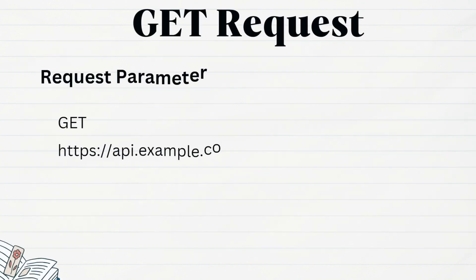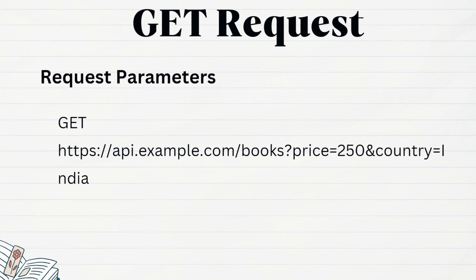Now let us analyze the different components of a REST request. To retrieve a list of all books filtered by price and country, a GET request can be used. The first part is GET, which tells us the type of HTTP request. Then we have a base URL common to all application endpoints, followed by slash books, which is the actual endpoint. After slash books, we can see two key-value pairs after a question mark — those are the filter fields passed as request parameters. These request parameters will be received at the server and used to filter the data. So in this case, books with the country India and price 250 will be returned.